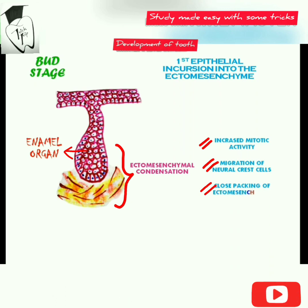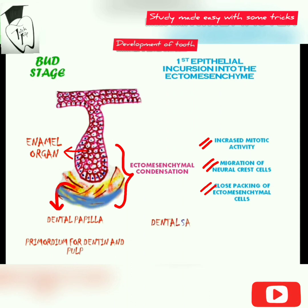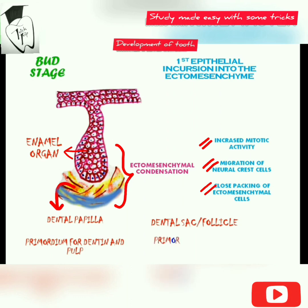The area of ectomesenchymal condensation just around the enamel organ is called the dental papilla, which is the primordium for the dentine and pulp. The condensed ectomesenchyme that surrounds the dental papilla is called the dental follicle or dental sac, which is the primordium for the cementum, periodontal ligament, and alveolar bone.